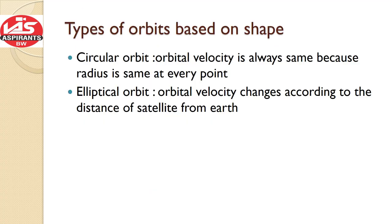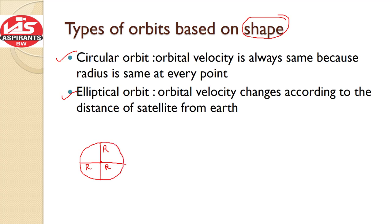We can classify orbits based on various criteria. The first criterion is shape — broadly, we have two types: the circular orbit and the elliptical orbit. In a circular orbit, the distance from the center remains the same at every point. In an elliptical orbit, the distance varies at every point — for example, the Moon traces an elliptical path around the Earth, so the distance is varying.